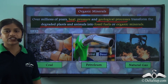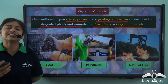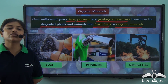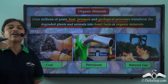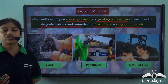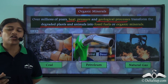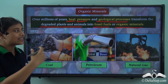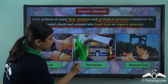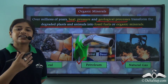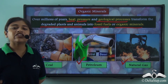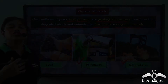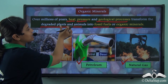In our previous lessons on weathering and soil formation, we learnt about the different types of rocks — particularly sedimentary rock, which is formed when degraded or dead plants and animals get carried away by natural forces like wind and water and get deposited at the seabed layer by layer. Over millions of years, due to heat and pressure, they get converted into sedimentary rocks containing fossils. These fossils can be used as fuels — some common organic minerals are coal, petroleum and natural gas.